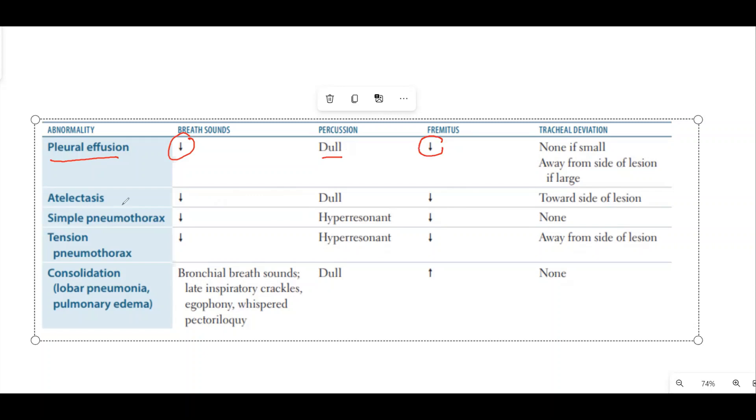In atelectasis, same findings are found as in pleural effusion. Next is pneumothorax and tension pneumothorax. In tension pneumothorax, breath sounds and fremitus are decreased, and on percussion, it is hyperresonant.